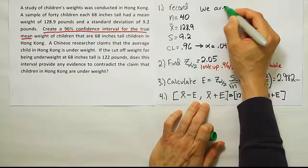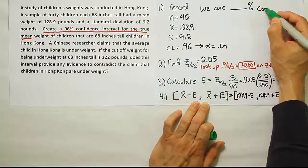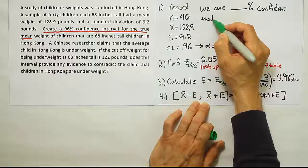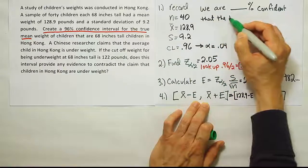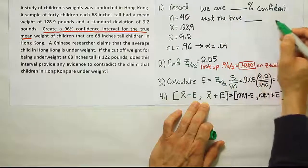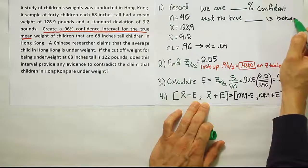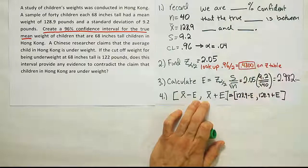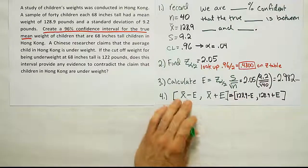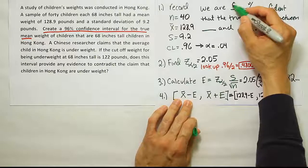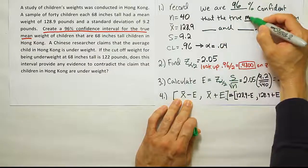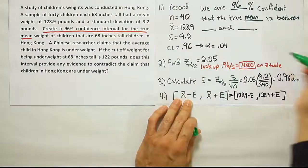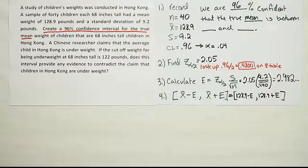We are blank percent confident that the true blank is between blank and blank. Okay, so for us, it's going to be we are 96 percent confident that the true mean weight, right, for children who are 68 inches tall is between, and now we'll get our numbers and fill them in here.